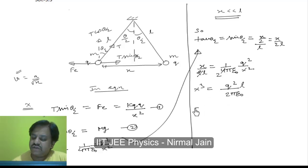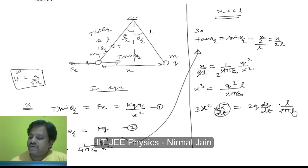If we differentiate this equation, then what we will get is 3 X square dx by dt which becomes velocity which is given A by root X is equal to L by pi epsilon 0 mg times 2 q dq by dt. So what we get here is 3 X square times A by root X is equal to L by pi epsilon 0 mg times q dq by dt.